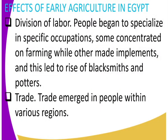The first effect is division of labor. People began to specialize in specific occupations — for example, some concentrated on farming while others made implements, and these led to the rise of blacksmiths and also potters. People could specialize in art activities or craft activities. So we had farmers and also those people who made implements.